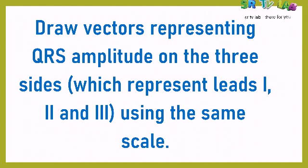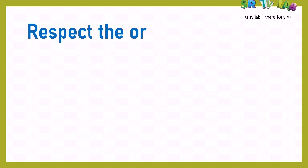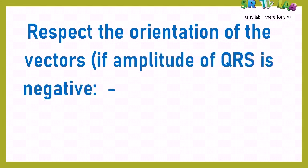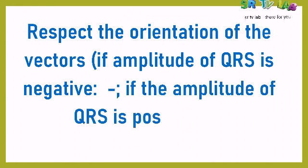You will use the same scale on every side. If you have taken millimeters as your unit, use millimeters. If you have taken centimeters, use centimeters on every side representing the leads. You also have to respect the orientation of the vectors — if the amplitude of QRS is negative, draw the vector in a negative direction.